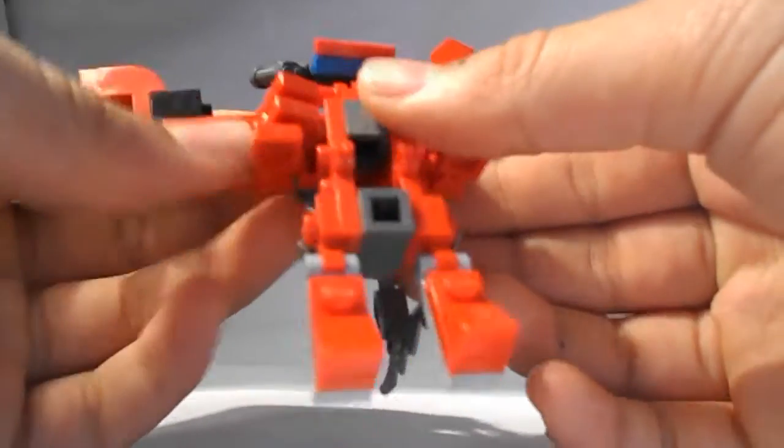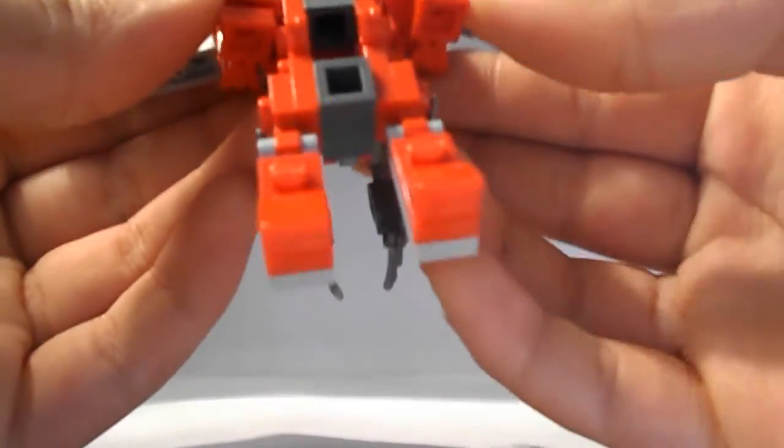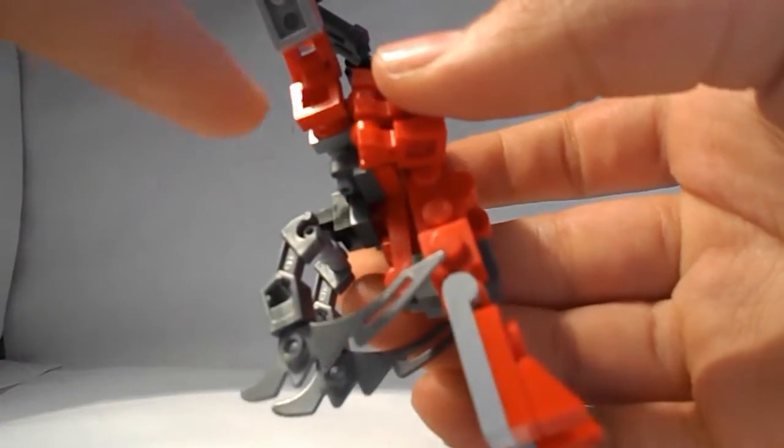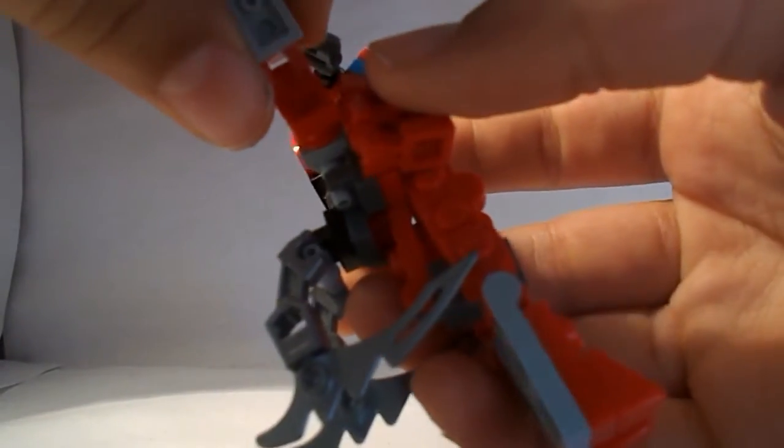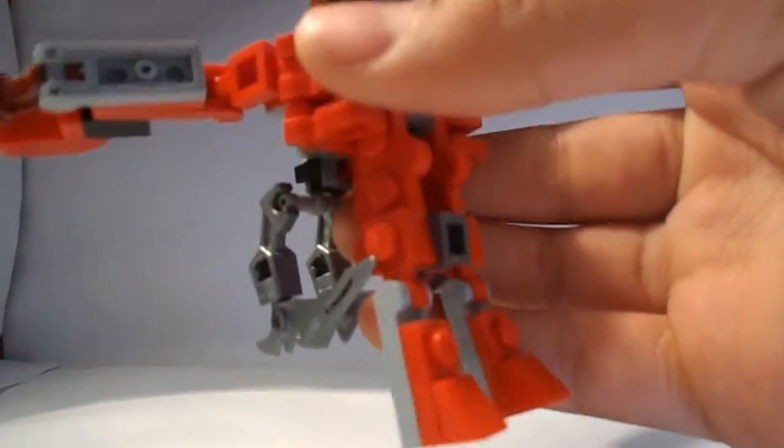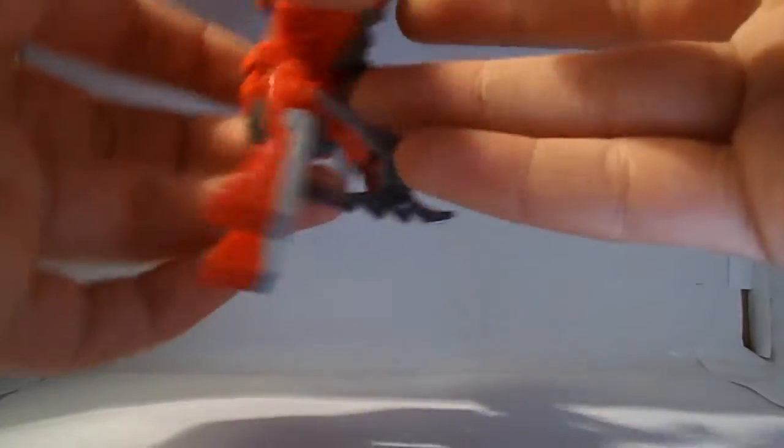Just fold in the lobster legs like so. And now we're going to fold back the claws. So just take this and fold it back like so. Do that on the other side.